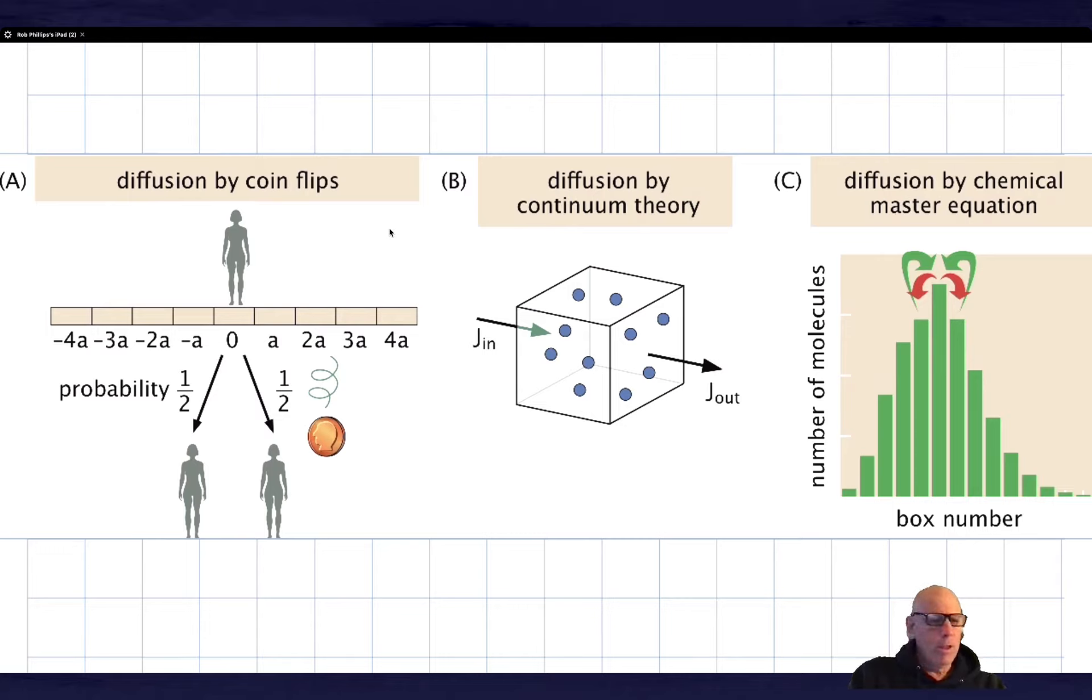I've already indicated that I'm excited about this idea of the psychological inequivalence of different approaches to the same problem. In a certain sense, diffusion by coin flips and diffusion by continuum theory couldn't be more different. The diffusion by coin flips is totally stochastic. If you think back to the trajectories I showed you, you have a given realization, it's heads and tails, and the position of the random walker as a function of time is stochastic. The diffusion by continuum theory is this really beautiful thing.